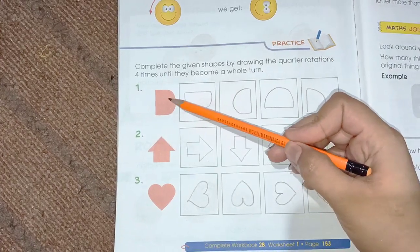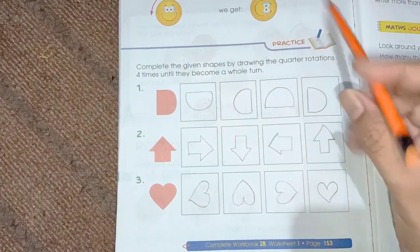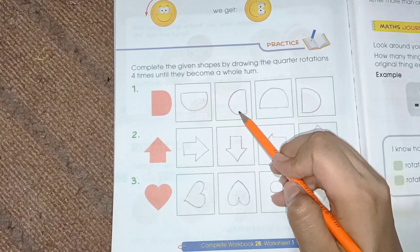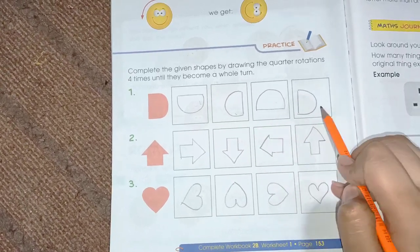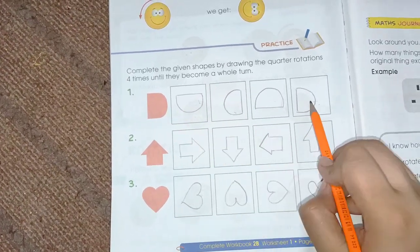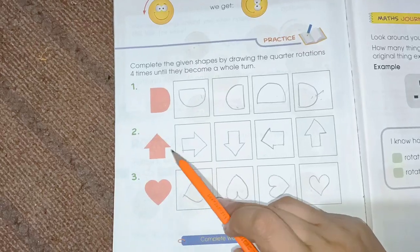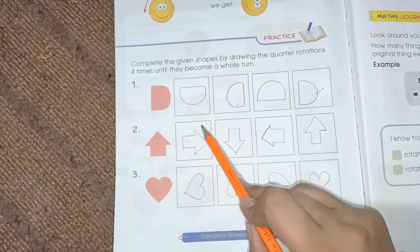Here if we turn this, it will become like this. Then again we turn this. Again turn, and then again it will like the same. It means it completes the whole.